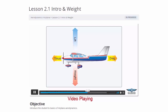We're going to start off with weight at 1,000, lift at 1,000, thrust at 100 pounds pulling, and drag at 100 pounds. Notice that for straight and level flight, the forces that oppose each other are equal. We'll start by looking at weight, then go into lift, drag, and then thrust.